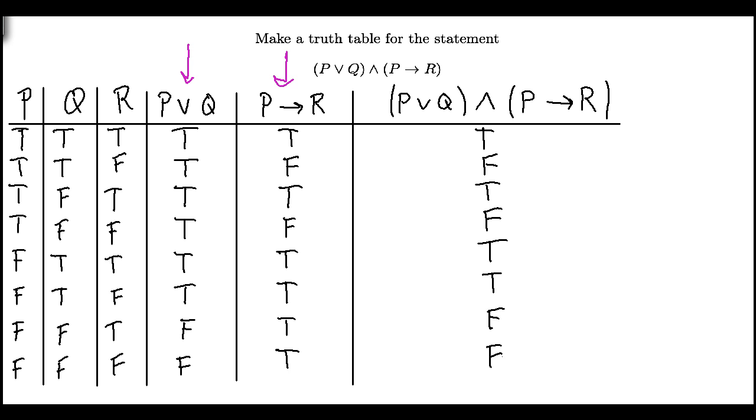So there you see the completed truth table, and from this I can read off any combination of truth and falsity for the sentence variables P, Q, and R, and say exactly what the entire sentence is. Alright, well thanks for watching, I hope this has helped.